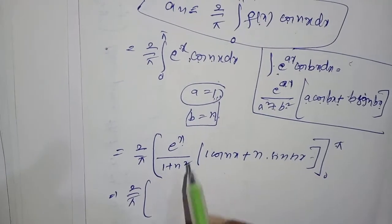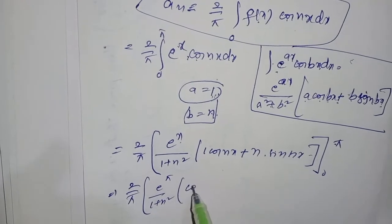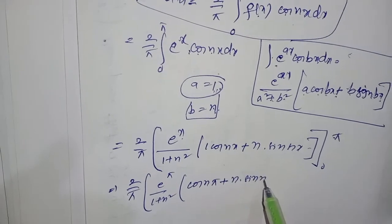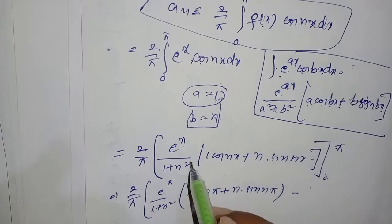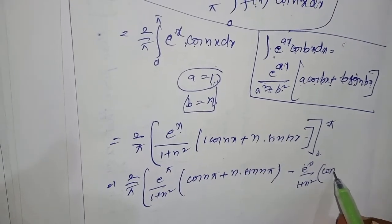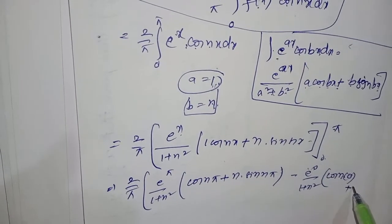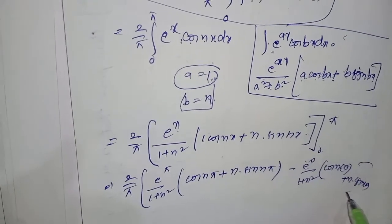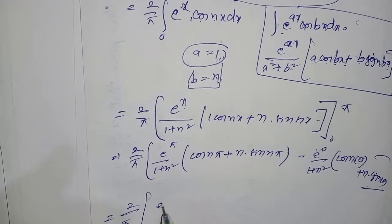Substituting the upper limit: eᵖⁱ / (1 + n²) × (cos(nπ) + n·sin(nπ)). Minus the lower limit: e⁰ / (1 + n²) × (cos(0) + n·sin(0)). This gives (2/π) × [eᵖⁱ / (1 + n²) × (cos(nπ) + n·sin(nπ)) − 1/(1 + n²) × (cos(0) + n·sin(0))].